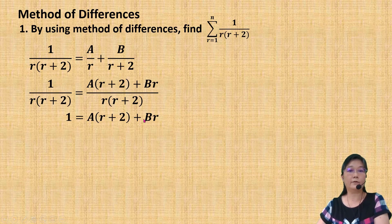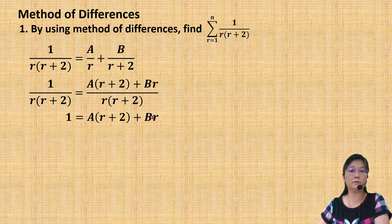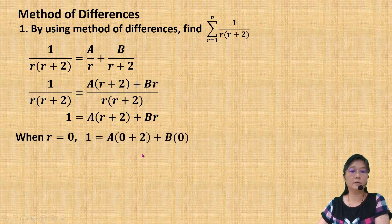To find the value of A and B, I simply choose a suitable value of r. To find the value of A, I want to cancel off B. So I choose r equals 0, because when r equals 0, B will disappear. When I substitute r with 0, I get the value of A is 1 over 2.